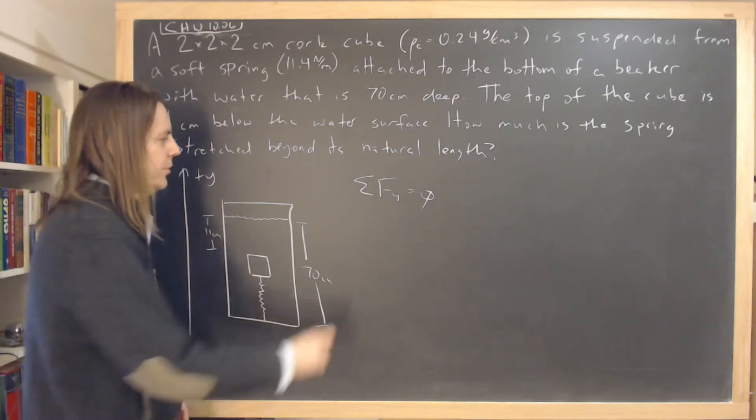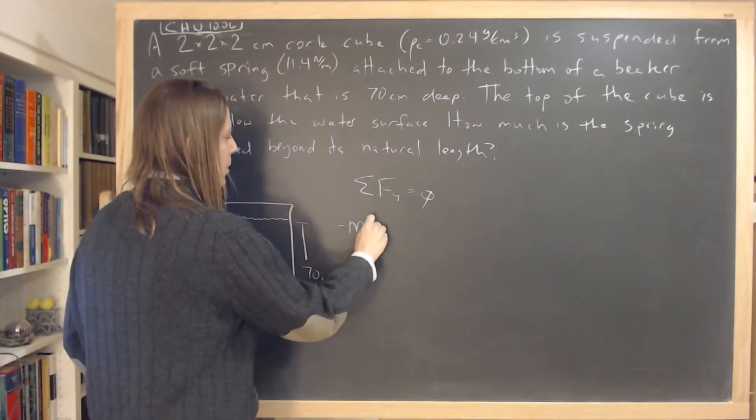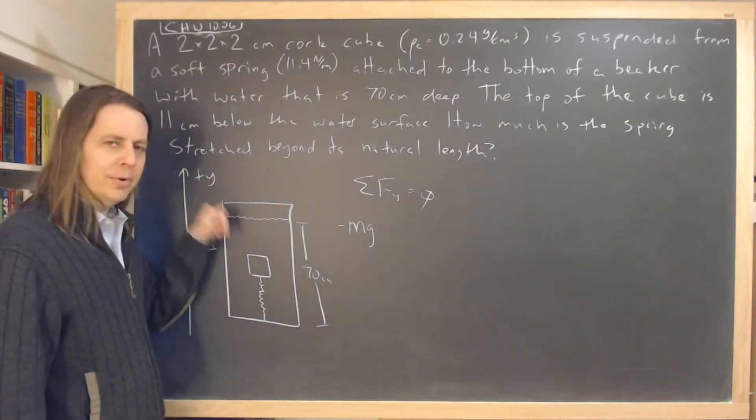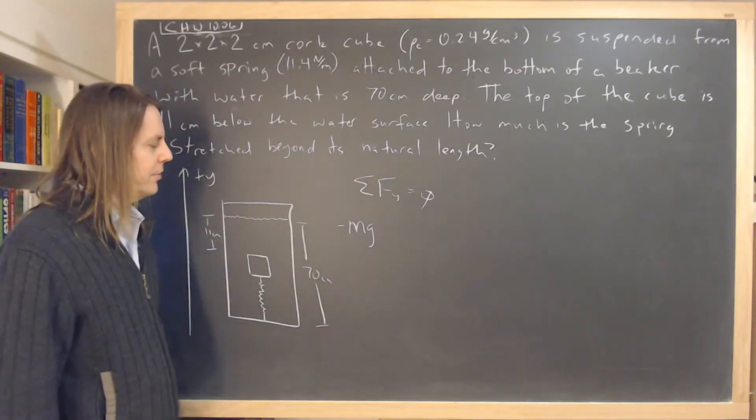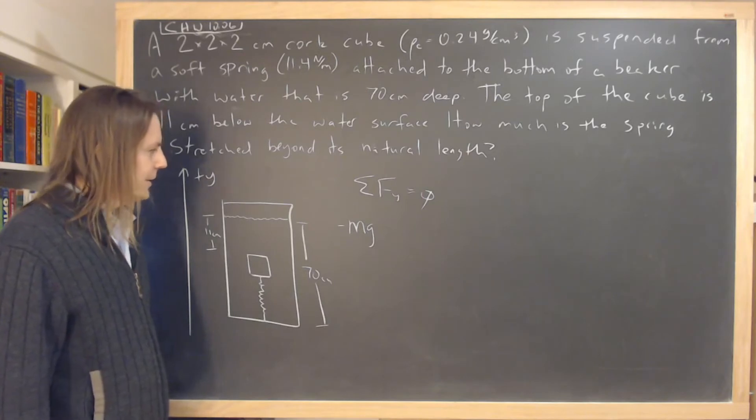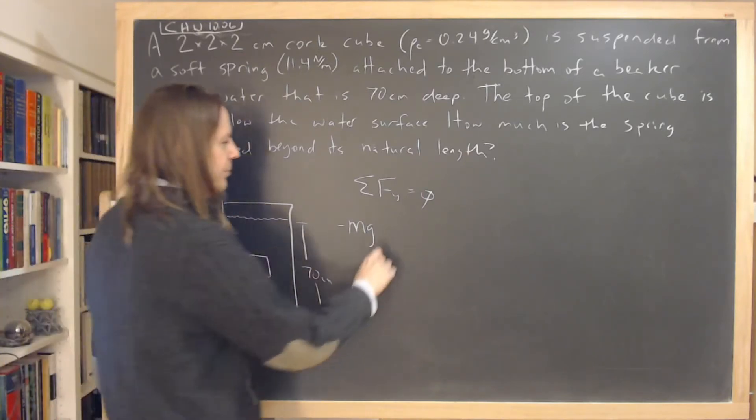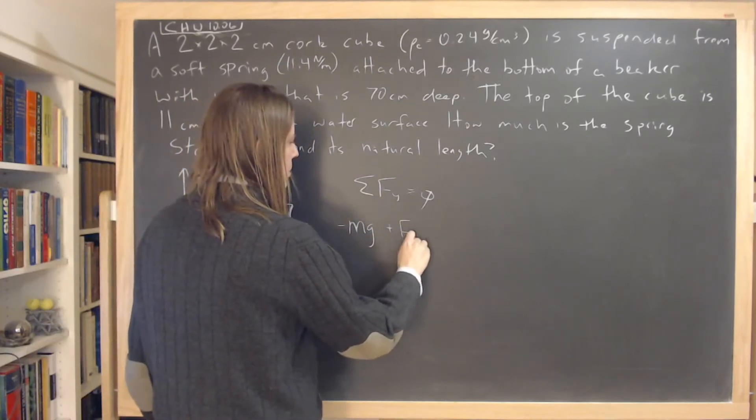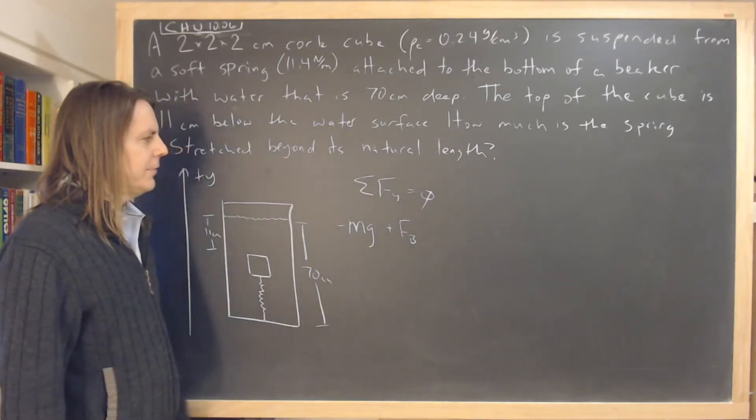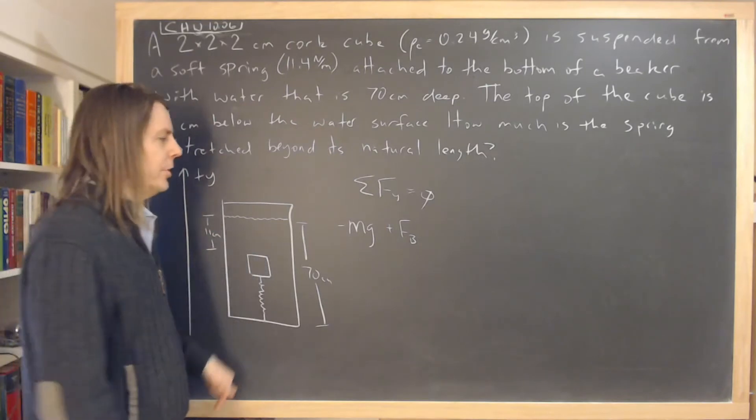So we just have to think about the cube and what are all the forces acting on the cube. So to start, there's the weight down as usual. Negative because positive will be up and negative will be down. And I'm not writing out the vector notation. Let's see, there's the weight down. What else is there? There's the buoyant force pushing it up. And then finally, the spring force pulling it down.